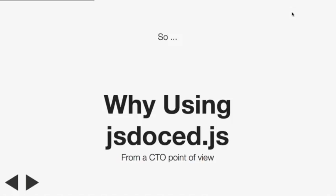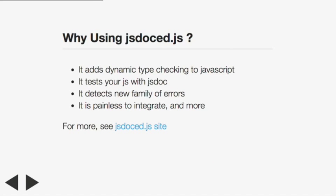Here's where you would use it if you were a CTO. Why is it interesting? It adds dynamic type checking to JavaScript. Dynamic type checking detects a lot of new errors - errors which are currently silently ignored. It extends your JavaScript with JSDoc, meaning you don't have to rewrite your whole application.